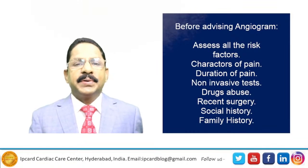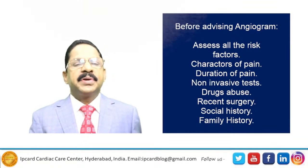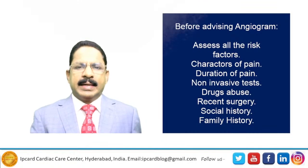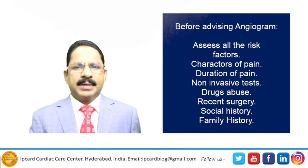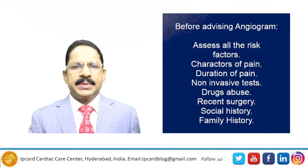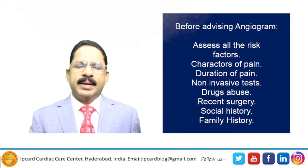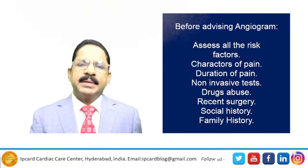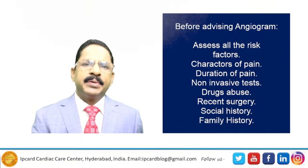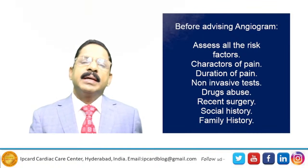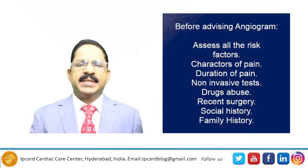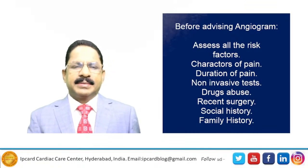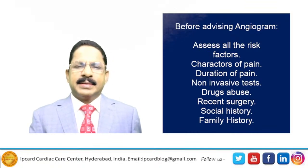If the block is 60 to 70% or 50%, we can tailor the treatment specifically to prevent progression of the plaque or to prevent a major heart attack in future. If the block is more than 75% and the patient is symptomatic — getting chest pain or shortness of breath while climbing stairs or doing mild to moderate activity — that block should be treated as early as possible. Even after maximum anti-anginal, lipid-lowering, and antiplatelet drugs, if a patient gets severe chest pain, they should be intervened by angioplasty or bypass surgery.